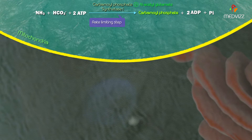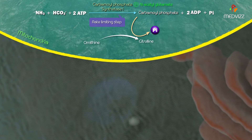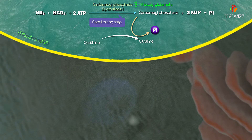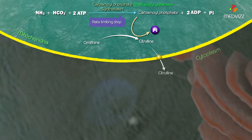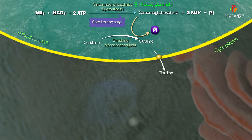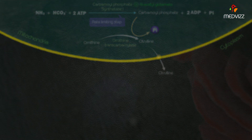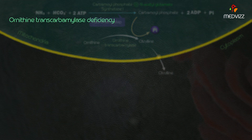The carbamoyl moiety is transferred to the non-proteinogenic amino acid ornithine to form citrulline. This step also takes place in the mitochondria, then citrulline is transported into the cytoplasm. The enzyme in this step is ornithine transcarbamylase, and deficiency of ornithine transcarbamylase is the most common inherited urea cycle disorder.